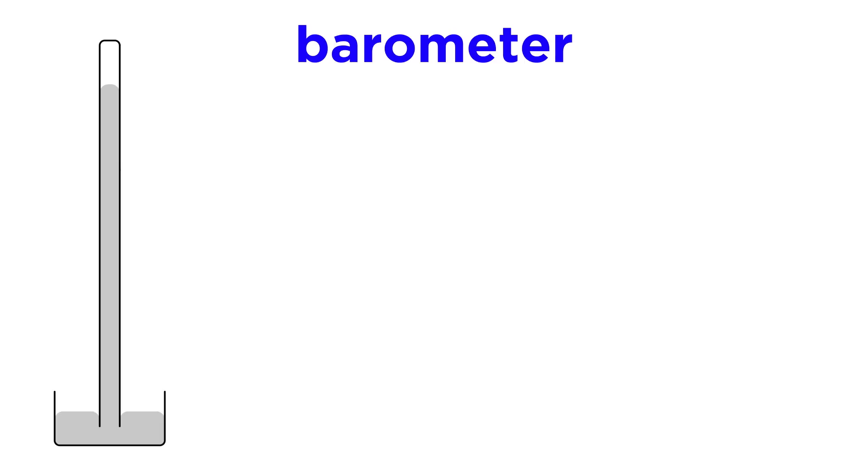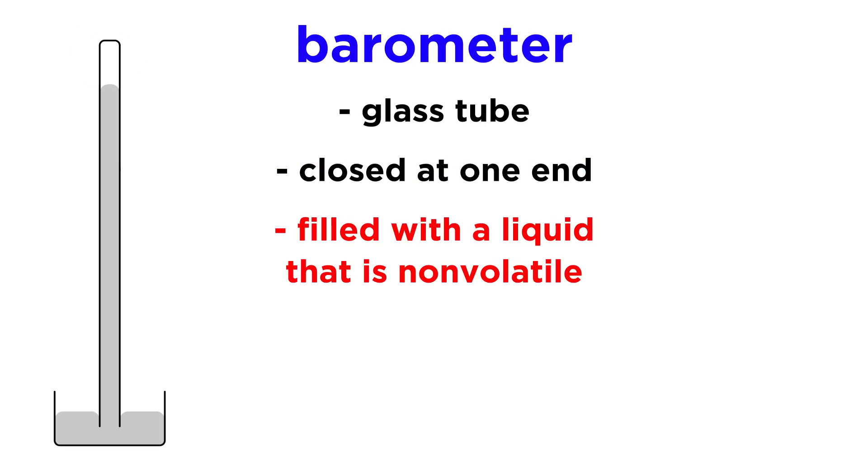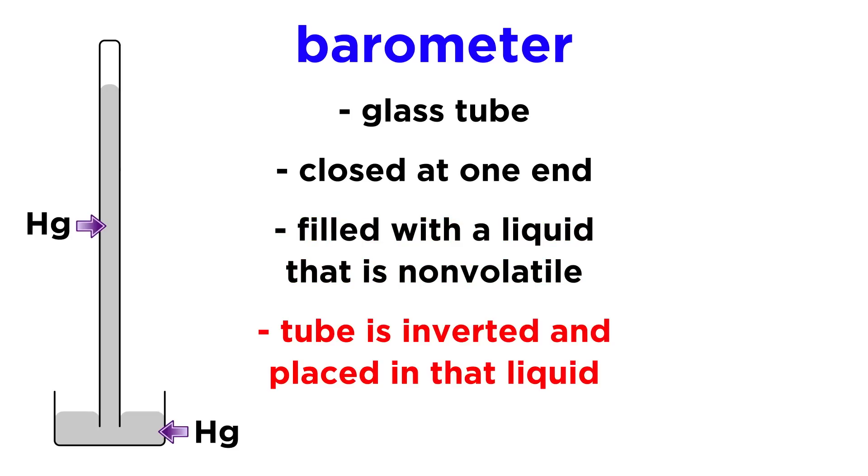One method of measuring atmospheric pressure is by using something called a barometer. A barometer is a glass tube that is closed at one end and then filled with a liquid, like mercury, that is chosen specifically because it is non-volatile, which means it does not evaporate, but will remain a liquid.